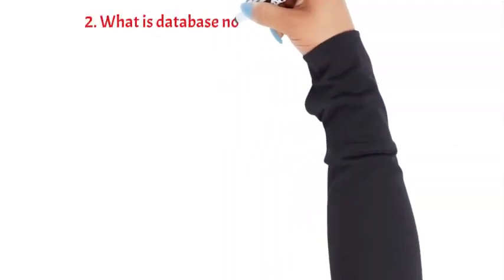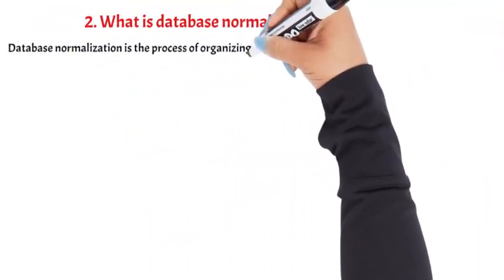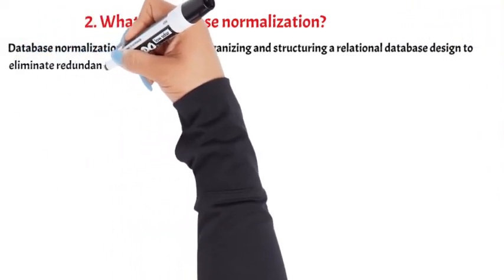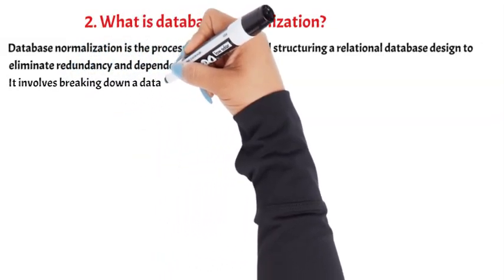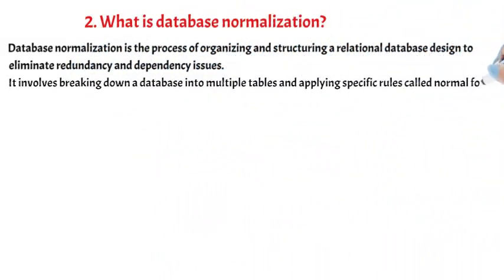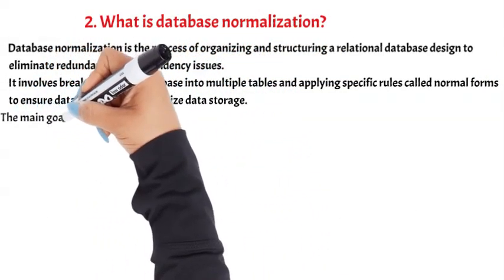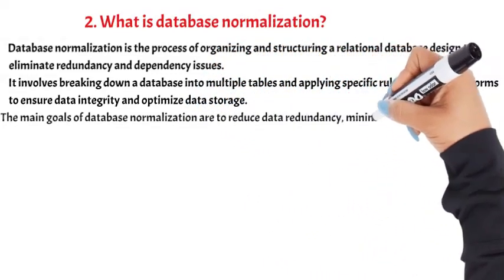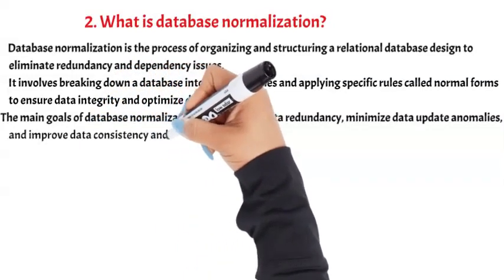Question 2: What is database normalization? Database normalization is the process of organizing and structuring a relational database design to eliminate redundancy and dependency issues. It involves breaking down a database into multiple tables and applying specific rules called normal forms to ensure data integrity and optimize data storage. The main goals of database normalization are to reduce data redundancy, minimize data update anomalies, and improve data consistency and integrity.